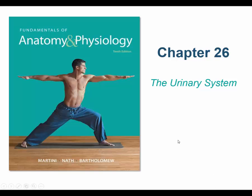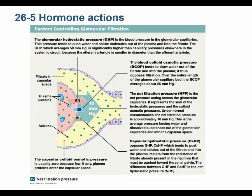We're going to talk about hormonal control and concentrating the urine — or making copious amounts of dilute urine. I want to back up and talk about filtration again, mainly because the hormones we're going to discuss affect blood pressure and therefore affect filtration. The glomerular hydrostatic pressure — blood pressure in the glomerulus — is the driving force pushing fluid out of the blood and into the filtrate.